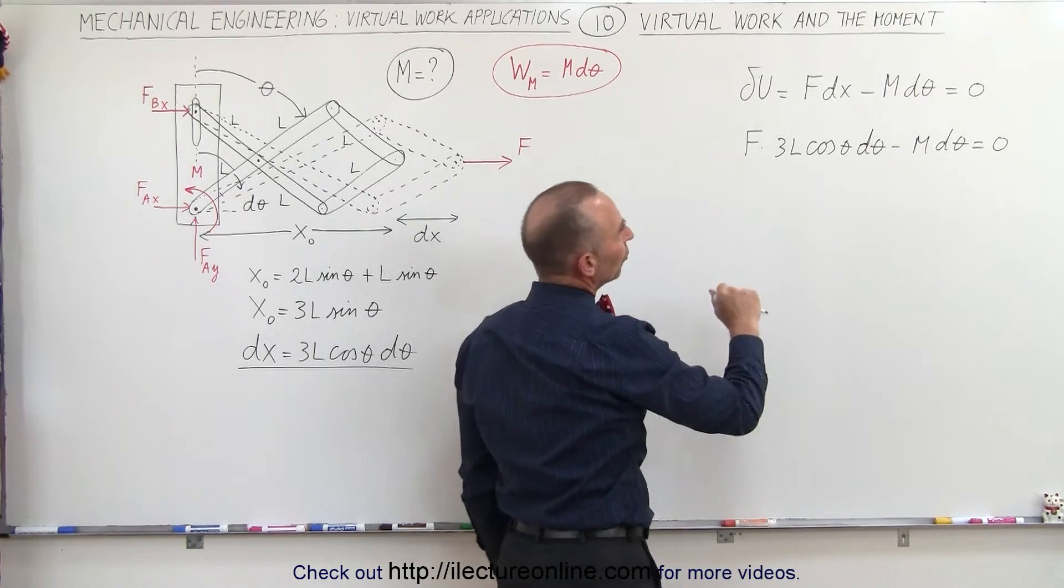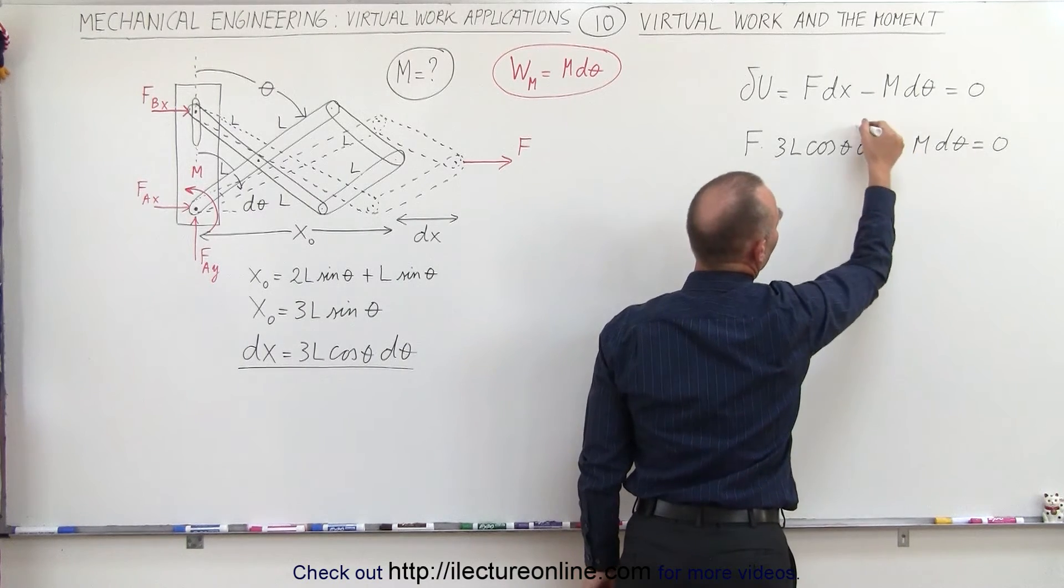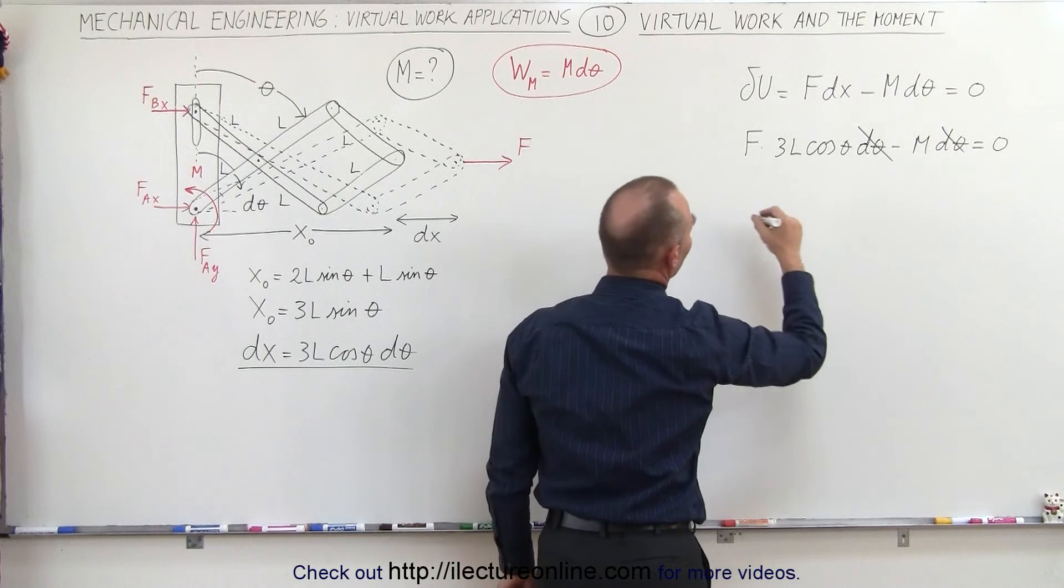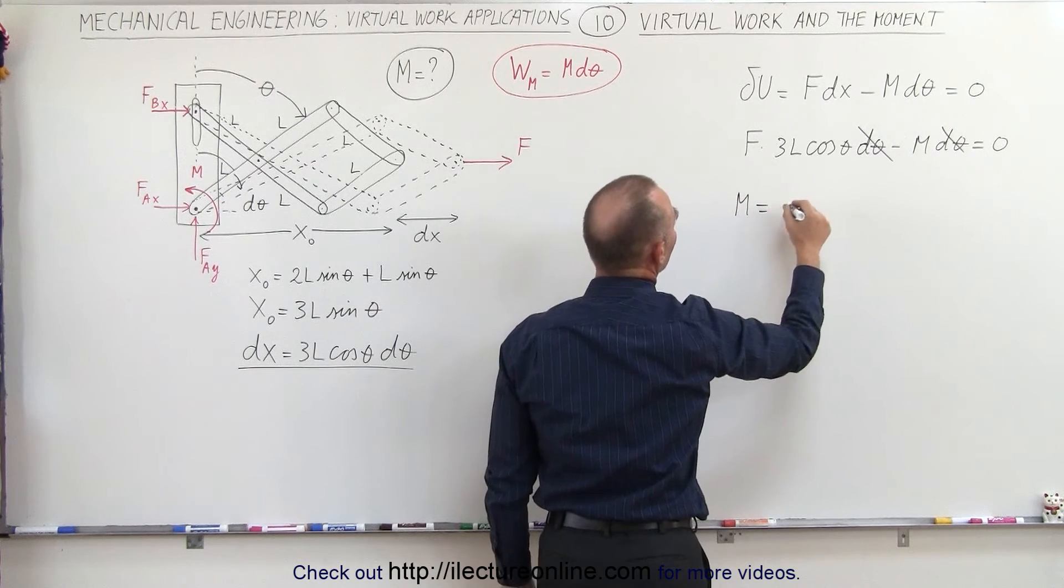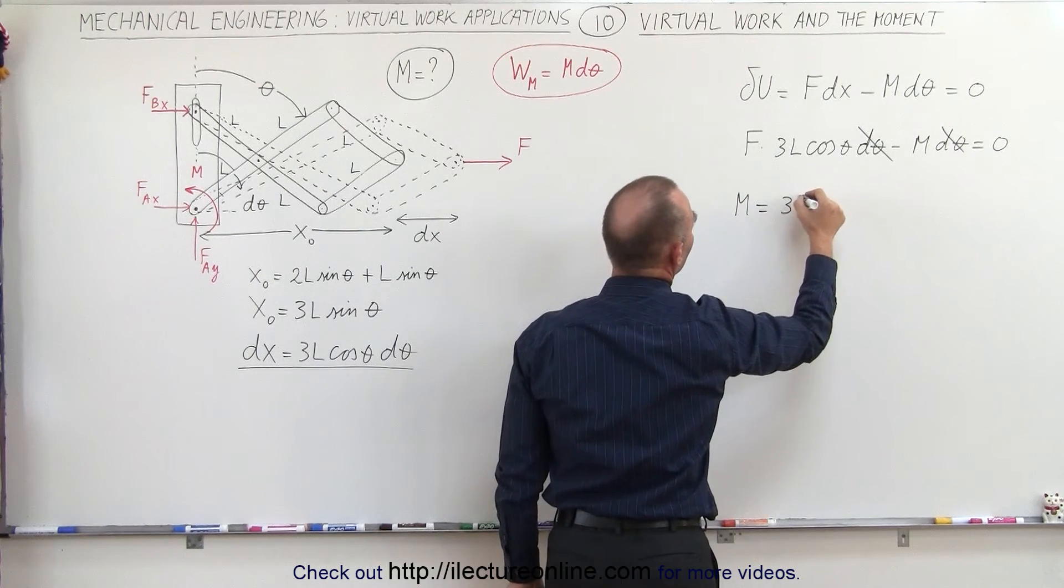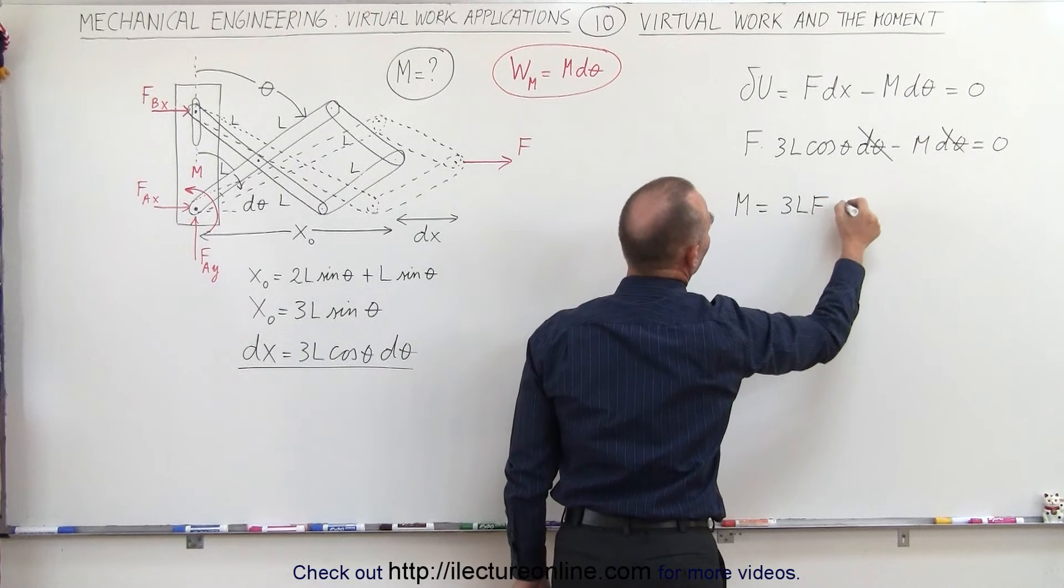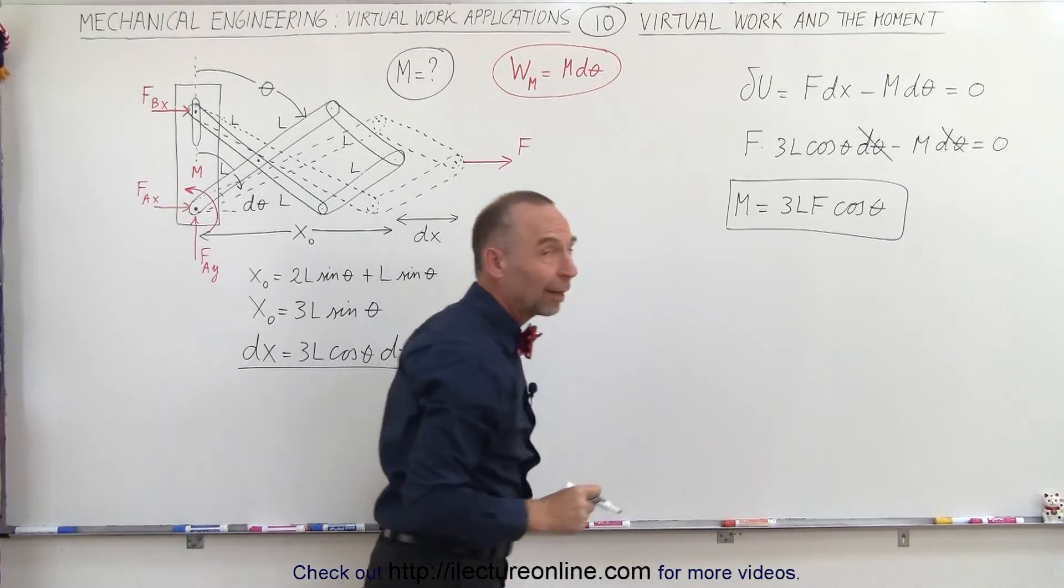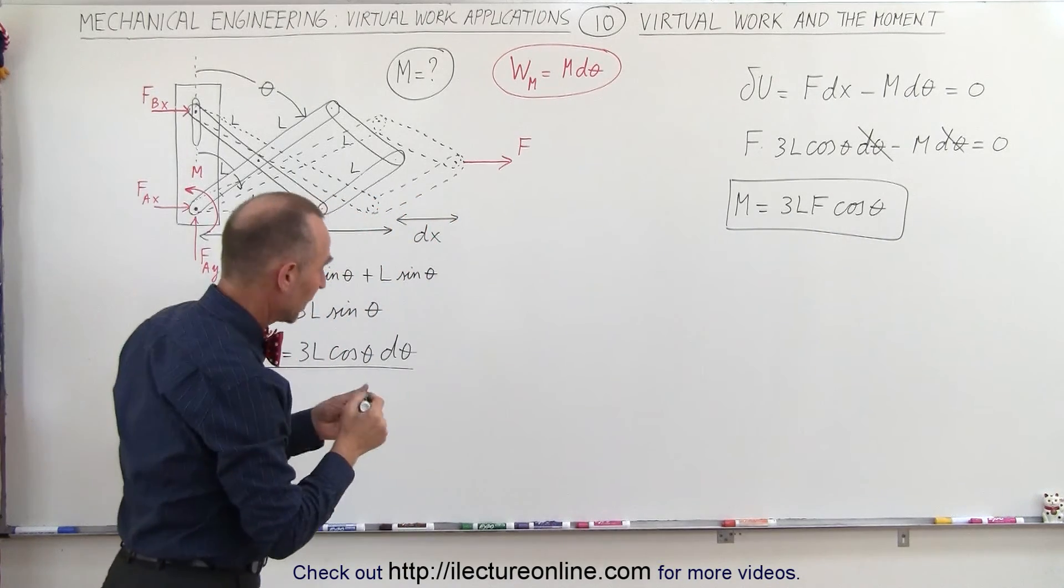Notice that both of the terms have a dθ in it so we can cancel out the dθ since it's equal to zero. And so now we can solve for M. The moment is equal to 3L times the force times the cosine of θ. Notice using virtual work that was actually quite easy.